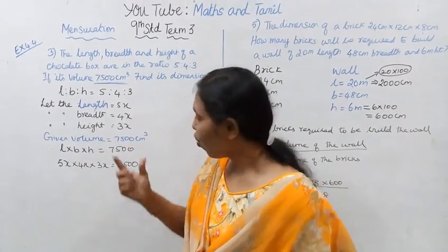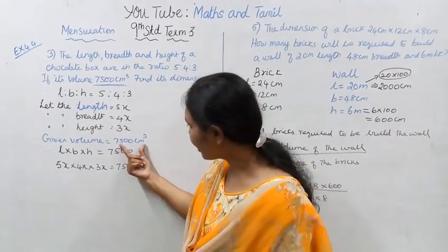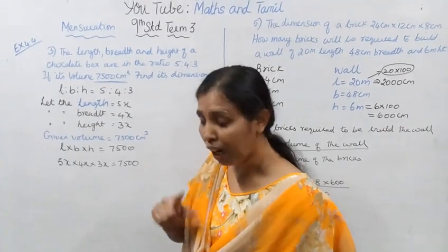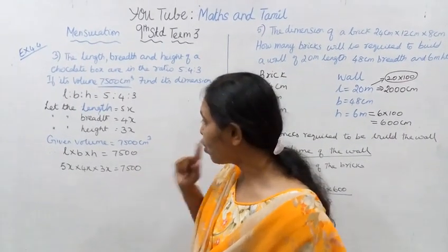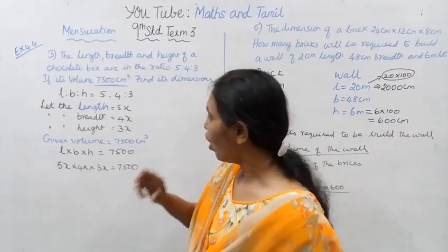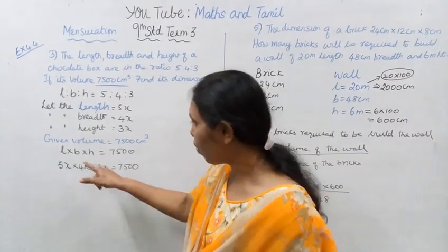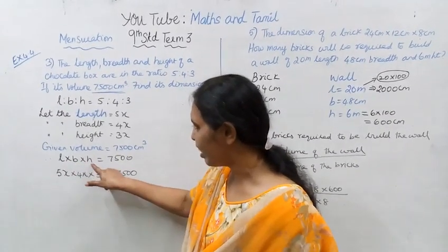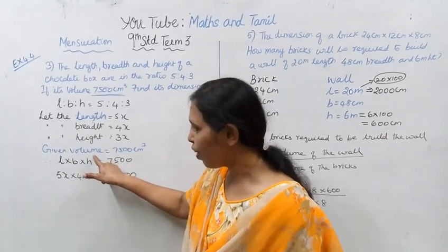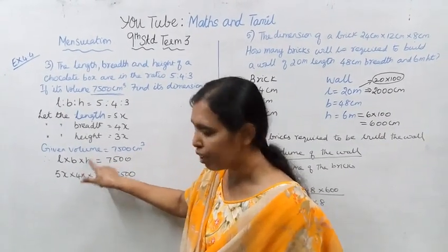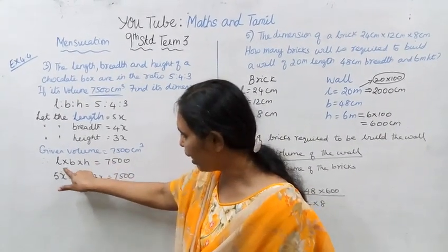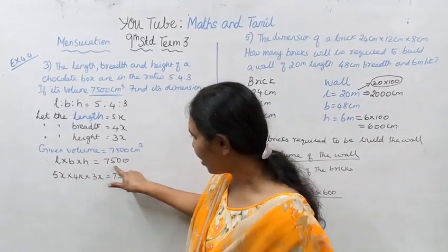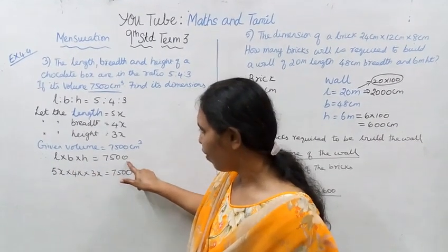Volume is given as 7500. The formula for volume of a cuboid is L into B into H, which equals 7500.